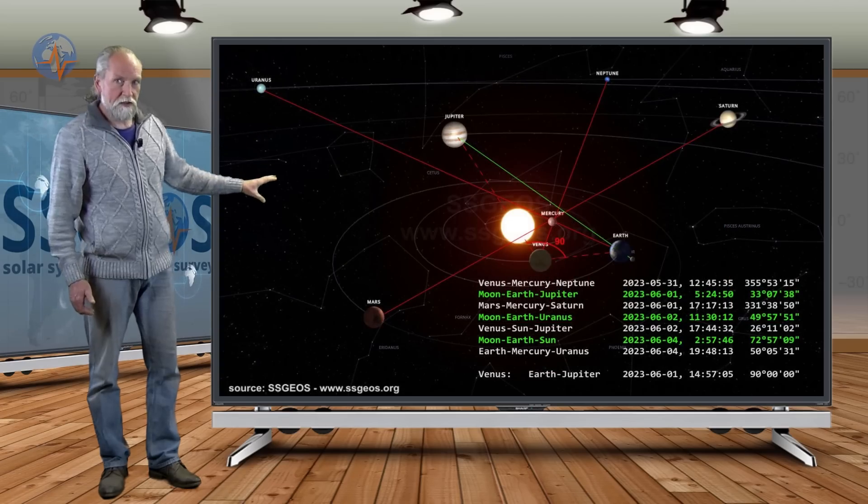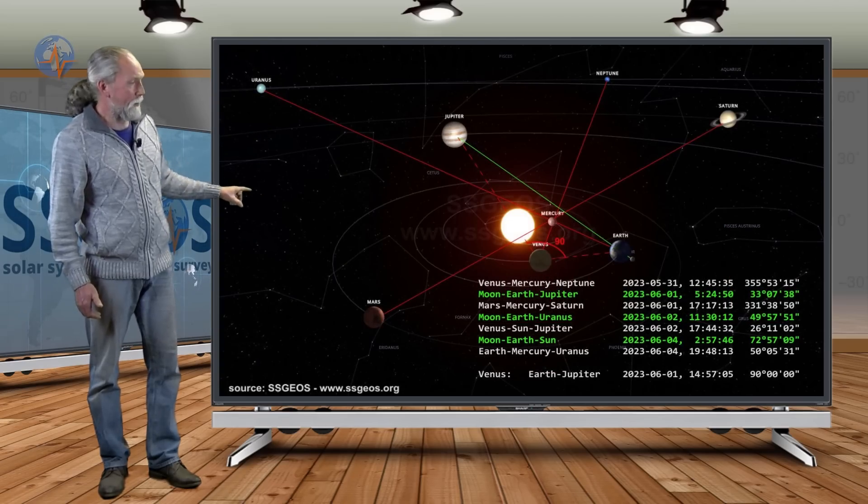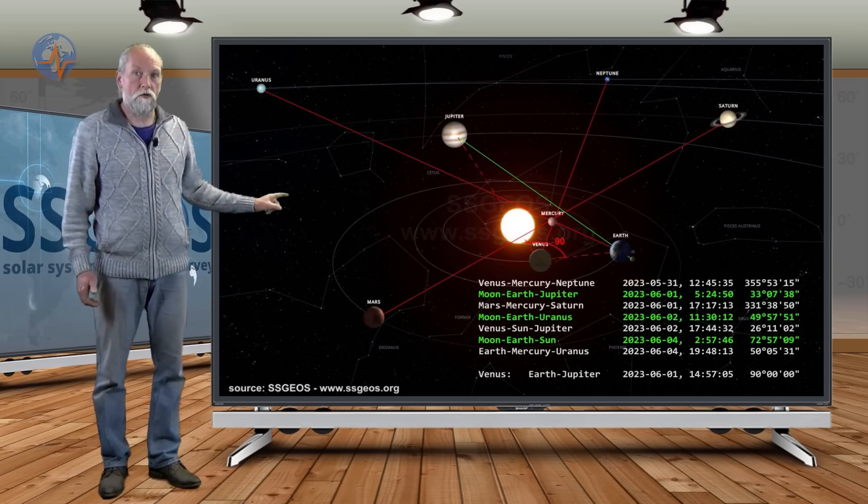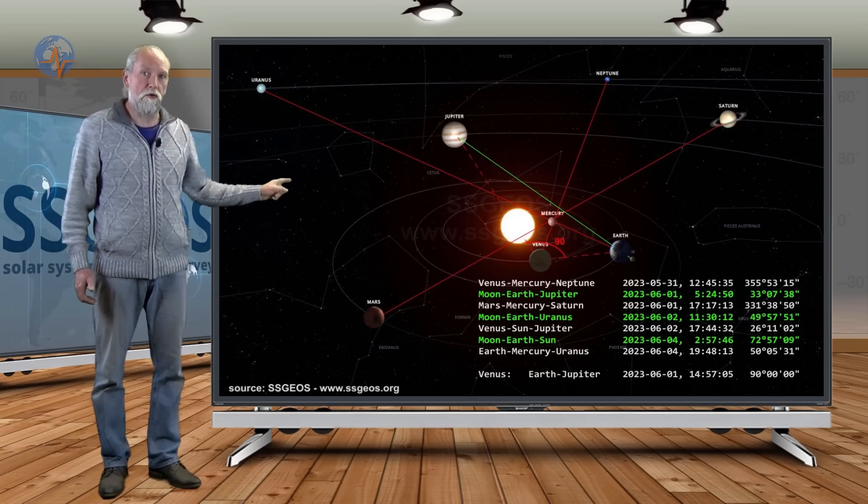In the solar system we see this planetary geometry depicted, and we also have Earth, Mercury, and Uranus coming up on the 4th, and that will be at the time of full moon.